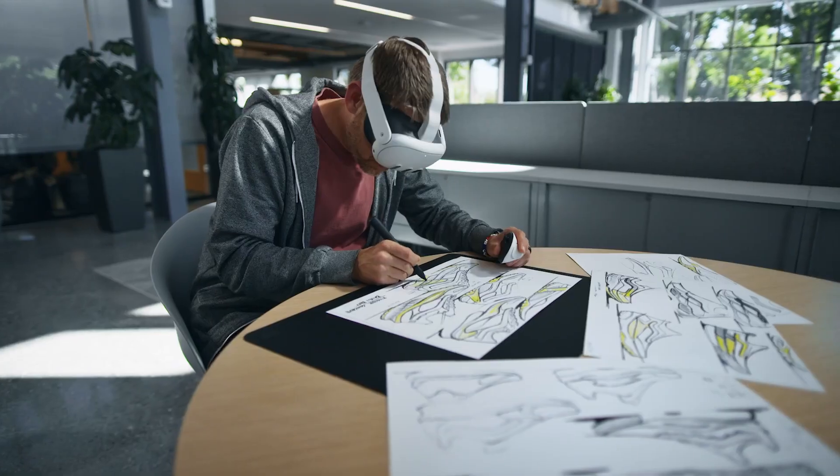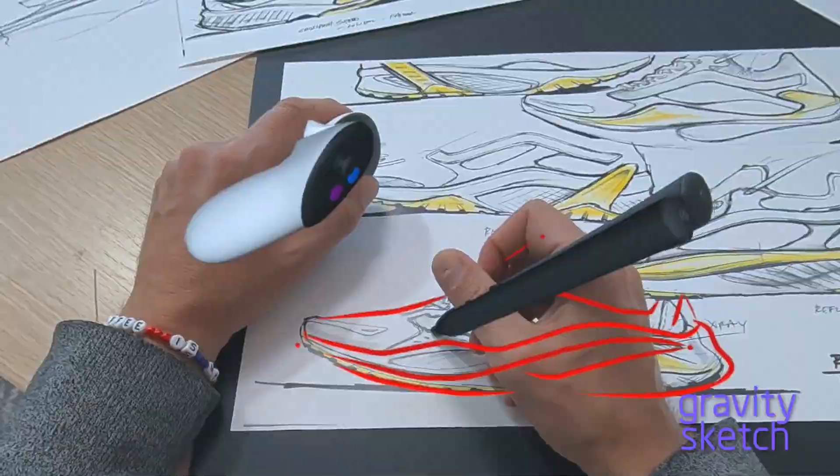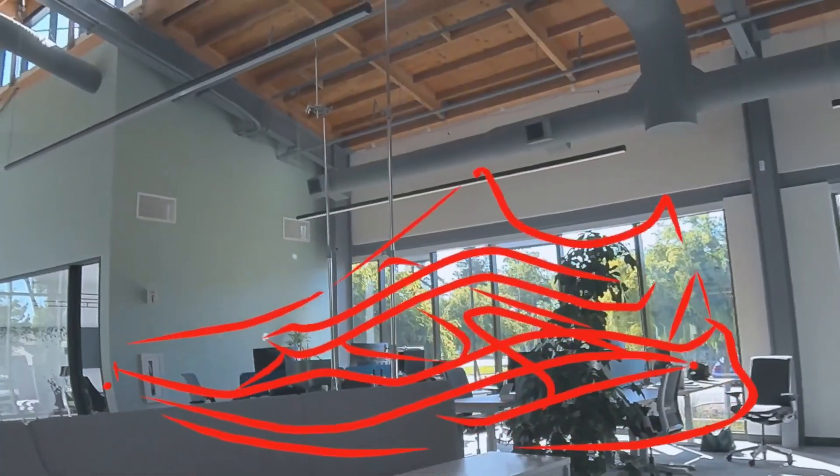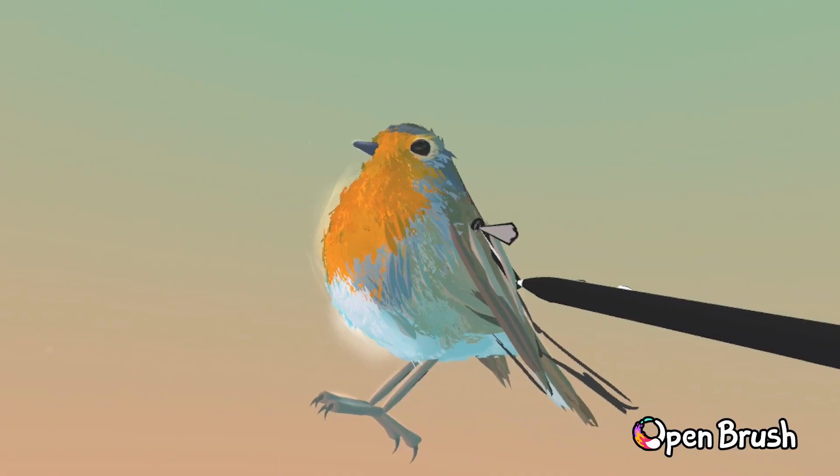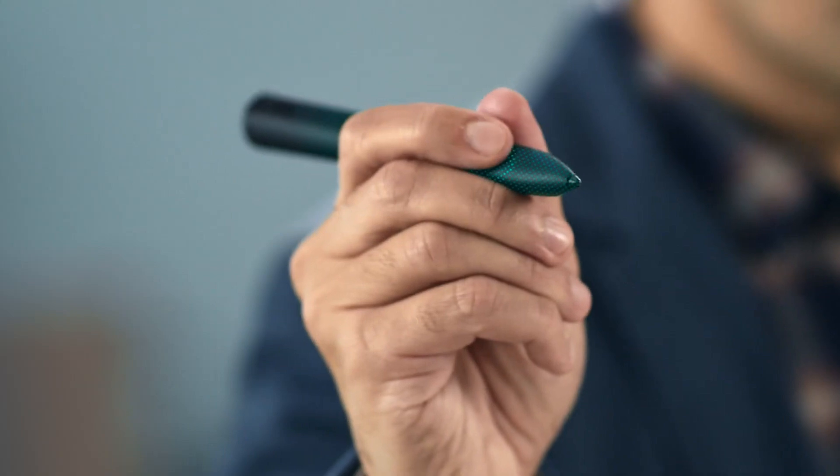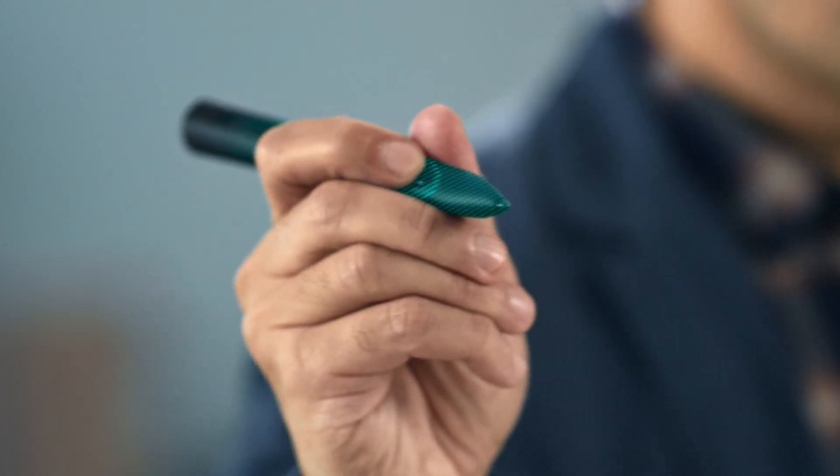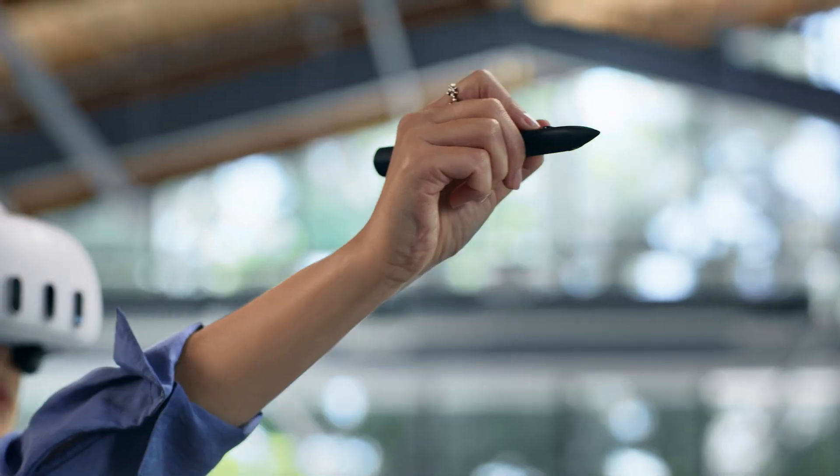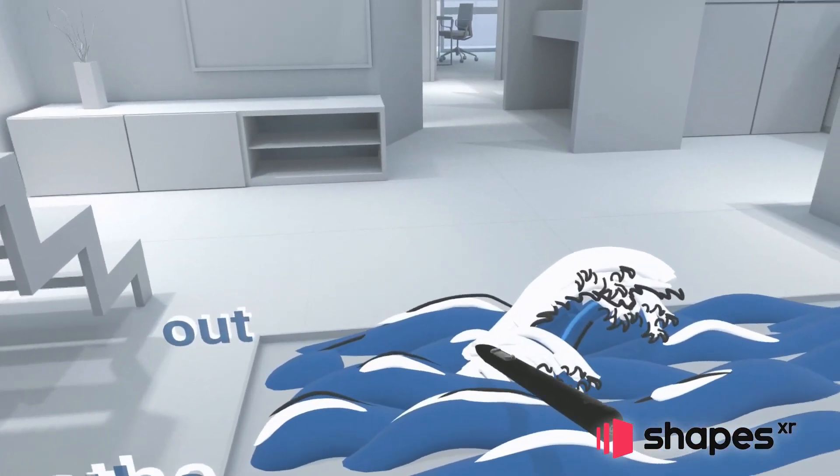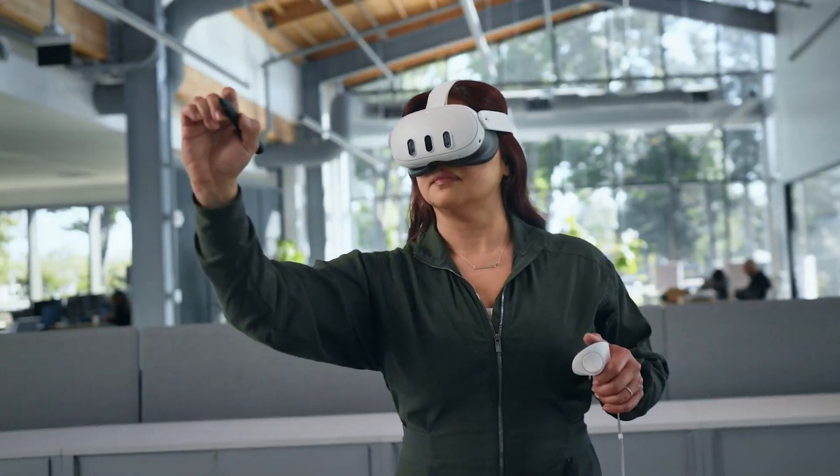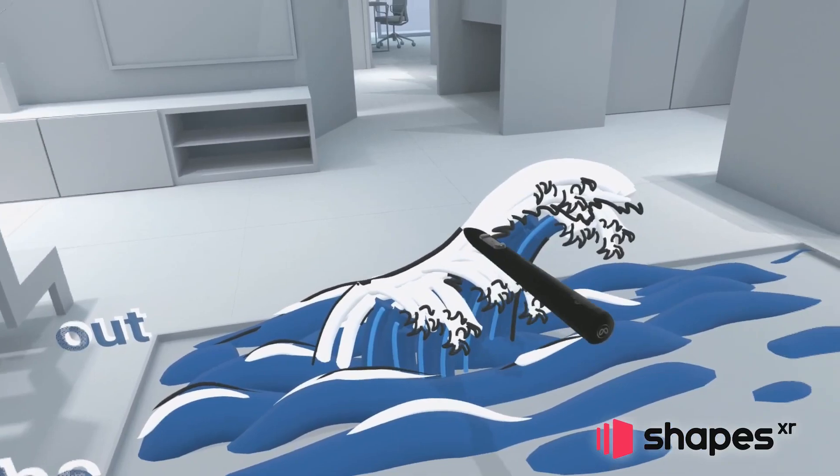The MX-Ink Stylus is a masterpiece of engineering, designed to thrive in mixed reality environments. Equipped with cutting edge sensors, it can effortlessly interact with both real and virtual spaces. Whether you're sketching on a traditional canvas or crafting designs in a virtual workspace, the MX-Ink Stylus captures every stroke with unparalleled accuracy.